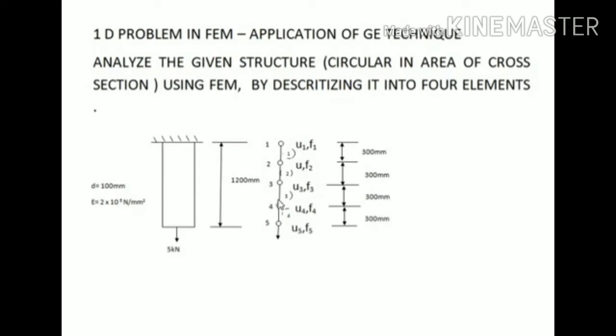We have to discretize the structure into nodes and elements. As given, the structure is discretized into 4 elements; therefore we have 5 nodes, numbered 1, 2, 3, 4, and 5. Elements are numbered in circled form as 1, 2, 3, 4. U1, U2, U3, U4, and U5 are the displacements at each node.